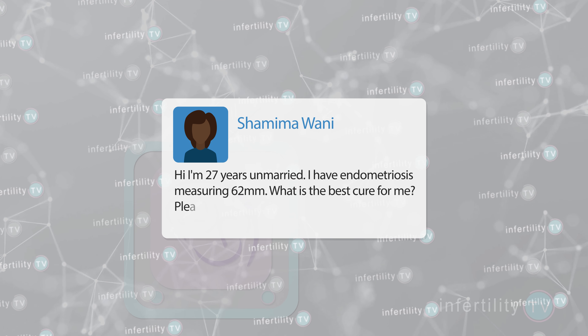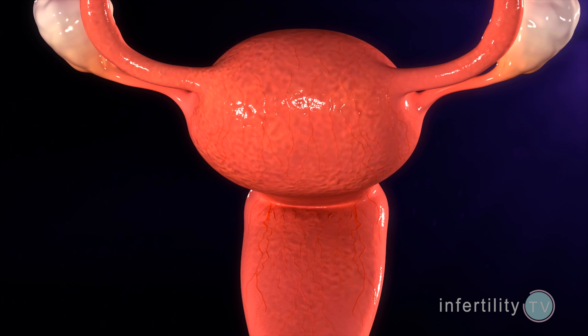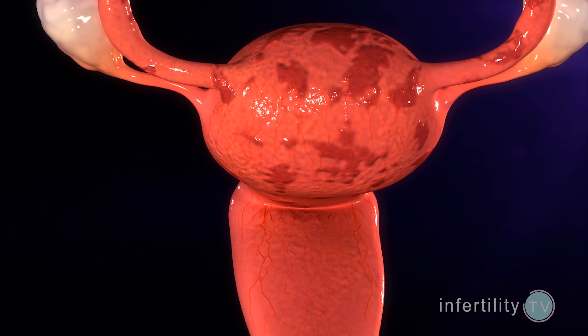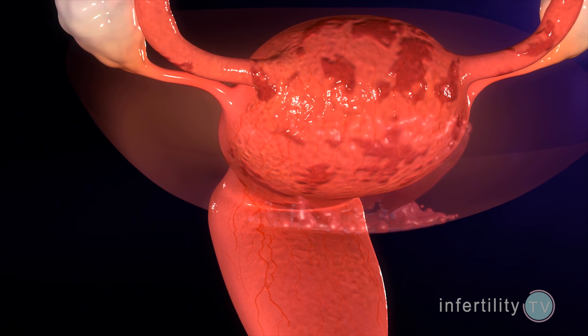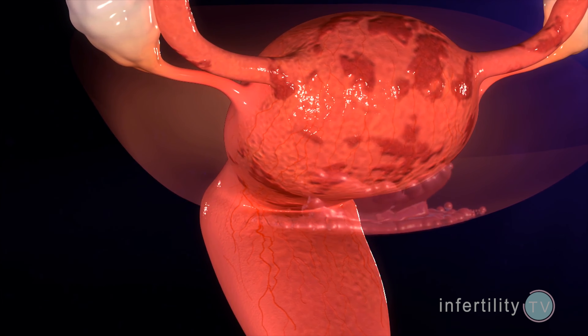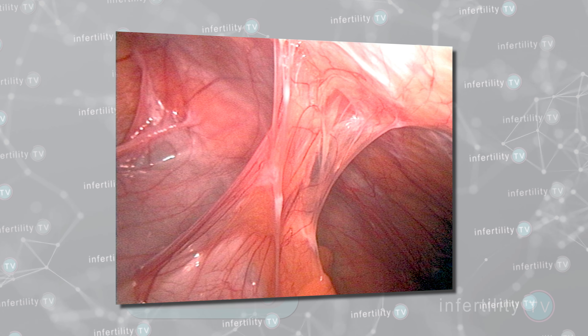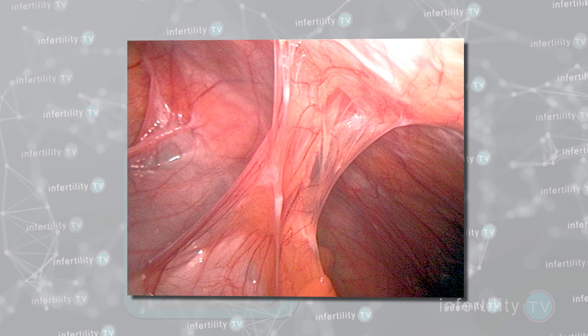Our next viewer says that she has endometriosis and wonders what the best cure is. Endometriosis is a problem that occurs when the tissue which normally grows inside the uterine cavity instead grows outside the uterus in the abdomen. Endometriosis can cause both pain and infertility. These areas of abnormally growing tissue respond to hormones the same way the uterus does, so when a woman has a period, these implants will also bleed. This causes inflammation in the abdomen which can lead to scar tissue, also known as adhesions.